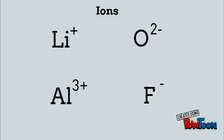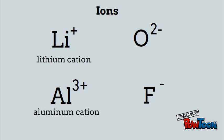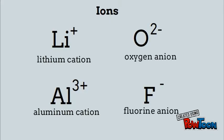Naming these ions is not any different. For lithium, it's just the lithium cation. For aluminum, it's an aluminum cation. The same goes for the anions — we have an oxygen anion and we have a fluorine anion.